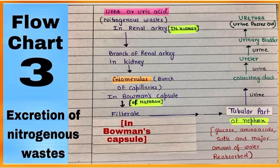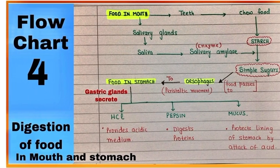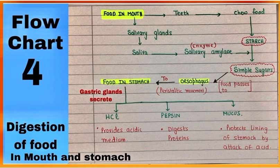Flowchart number three is showing the excretion of nitrogenous waste by the kidneys. Remember, nephrons are the structural and functional unit of the kidney.